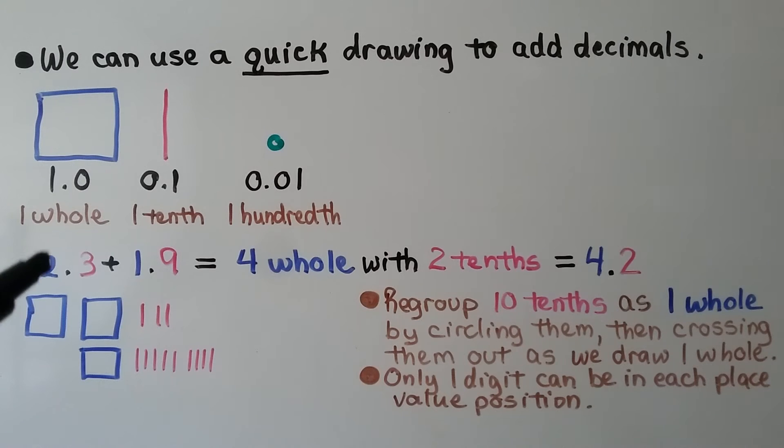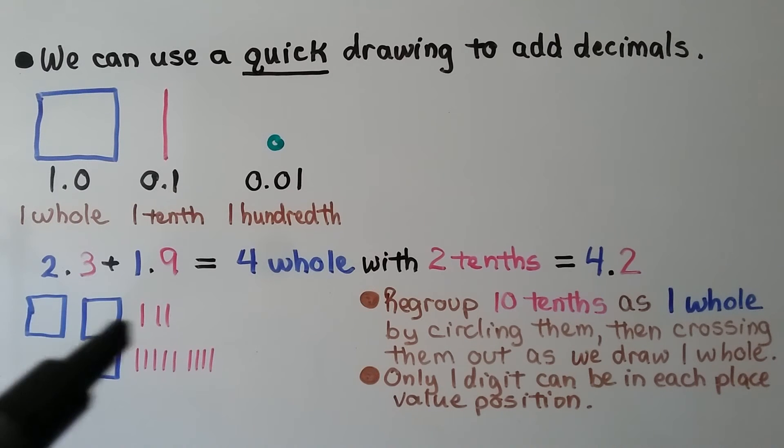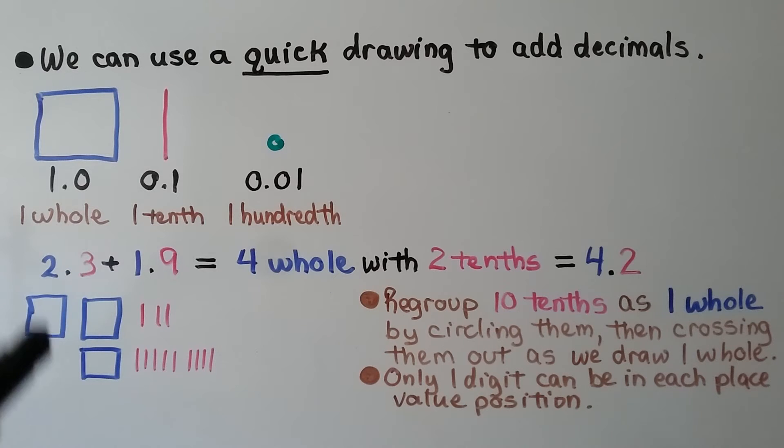We need to add 2 and 3 tenths plus 1 and 9 tenths. For the 2 and 3 tenths, we draw 2 squares for the 2 whole and 3 little lines for the 3 tenths. For the 1 and 9 tenths, we draw 1 square and 9 little lines for the 9 tenths.